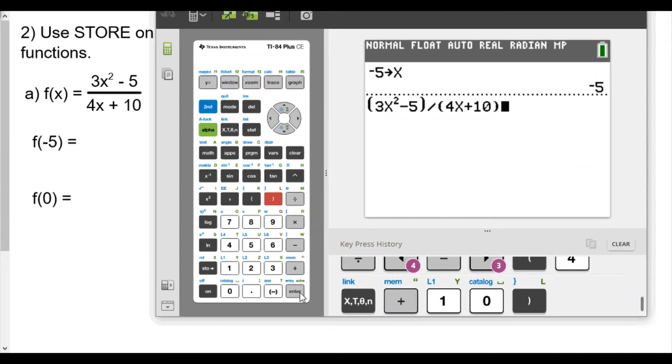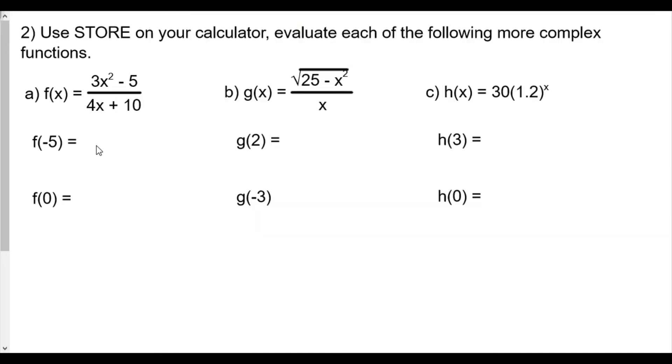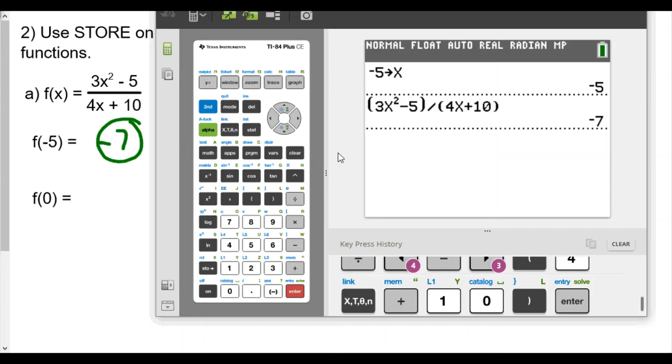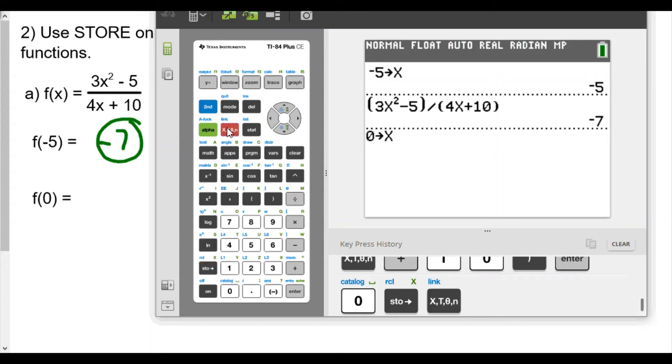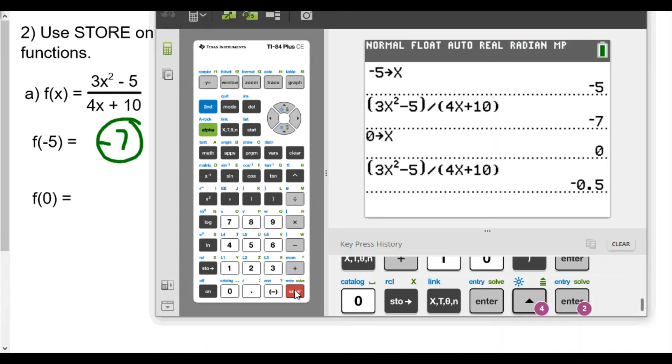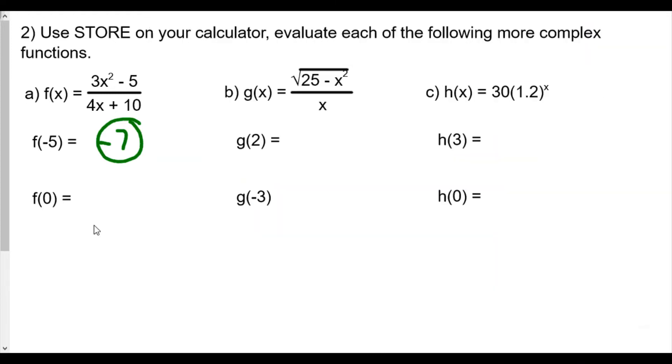Now we have this here, we're going to evaluate negative 7. So we'll plug negative 7 here. Now we try out the same function before, f of 0. So now we're going to store 0, store x, enter, and we're just going to move the cursor up to the expression here. It makes it much easier to not have to rewrite everything over again. Enter and we get negative 0.5 or negative one half.